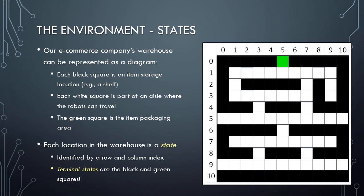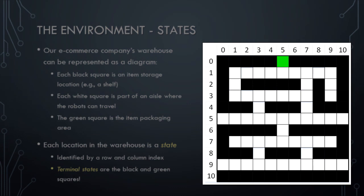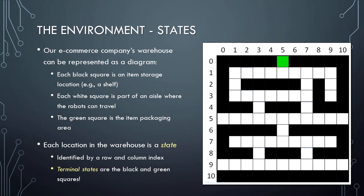Let's briefly discuss the states for our warehouse robot scenario. Our e-commerce company's warehouse can be represented as a diagram, as shown here. In the diagram, each black square represents an item storage location, such as a shelf or a storage bin. Each white square in the diagram is part of an aisle that the robots can use to travel throughout the warehouse. The green square in the diagram indicates the location of the item packaging area.